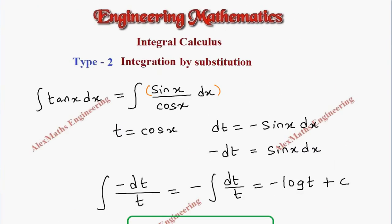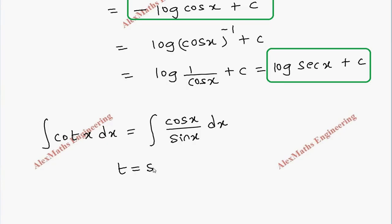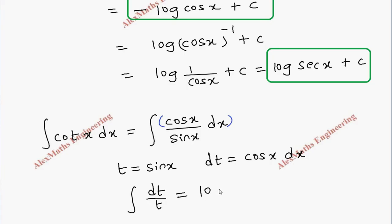In the same way we can derive another formula — integration of cot x. We don't have cot x in the inverse of the differentiation formula, so we use the substitution method. Cot x can be written as cos x divided by sin x dx. We take the substitution t equal to sin x in the denominator, so dt equals cos x dx. We got the entire numerator as dt and denominator as t, giving integration of dt by t, which is log t plus c.